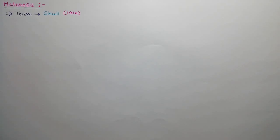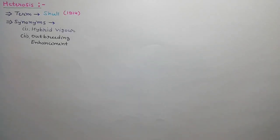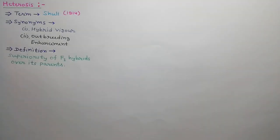First of all, we will discuss about heterosis. The term heterosis was first used by Schull in 1914. Heterosis has two synonyms: hybrid vigour and outbreeding enhancement. Heterosis refers to the superiority of F1 hybrids in many characters over its parents, such as general vigour, yield, adaptations, etc.